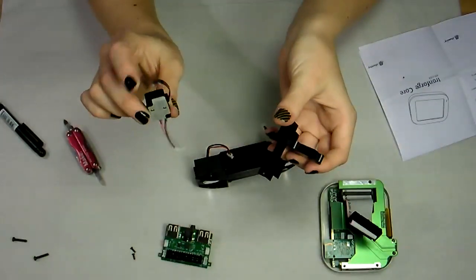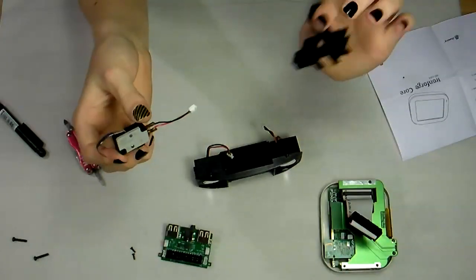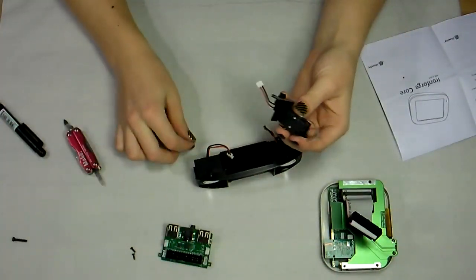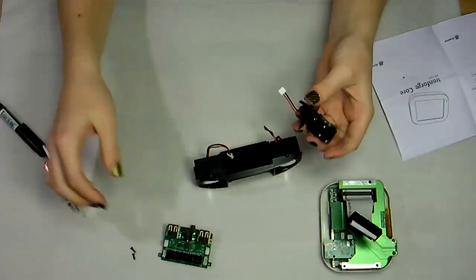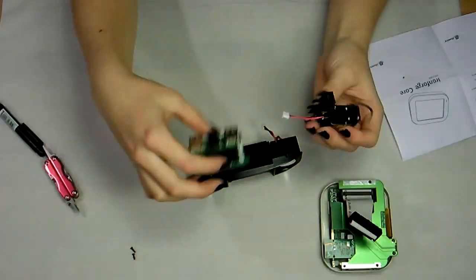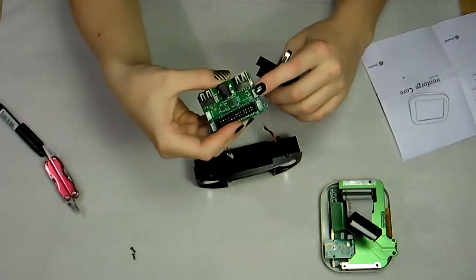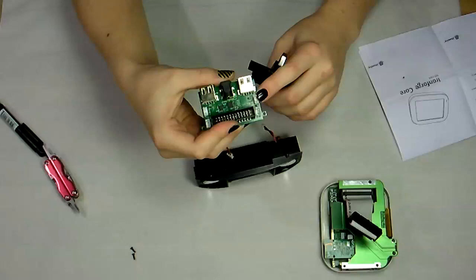Next, attach the bending switch to the other plastic piece that it mounts to with these big black screws. The polarity of the switch doesn't matter, so it doesn't matter which way you soldered it. Just plug it into the board right here where it says P22 bending unit.